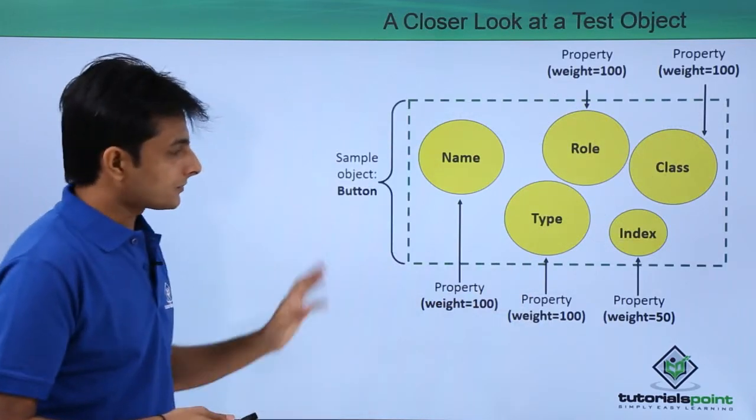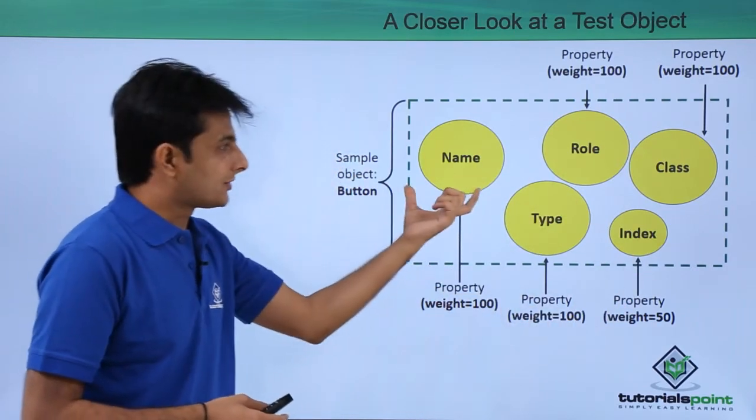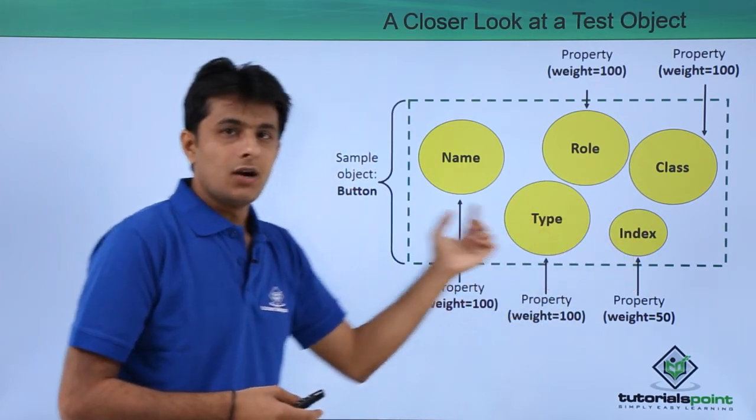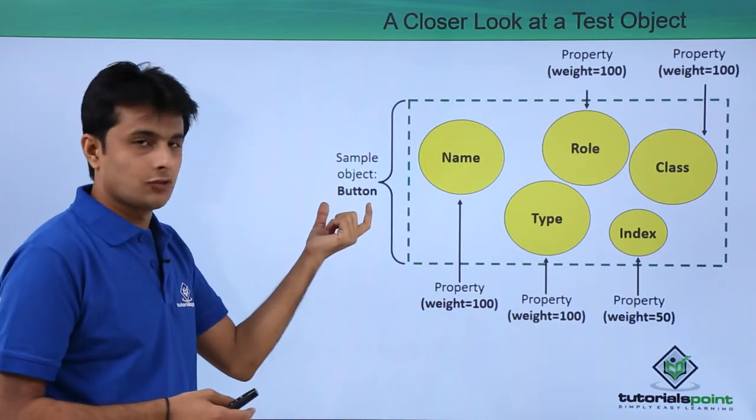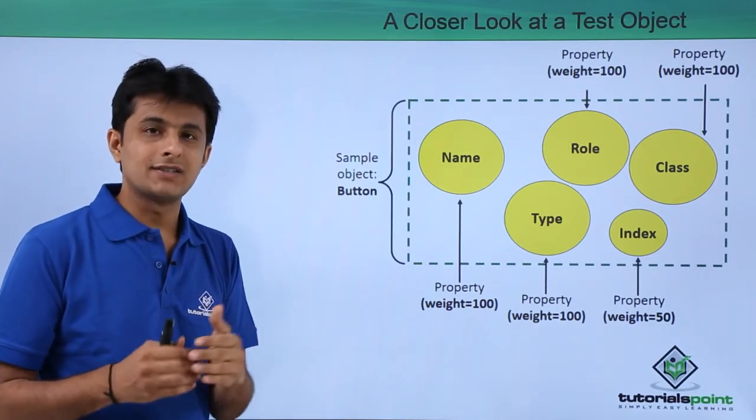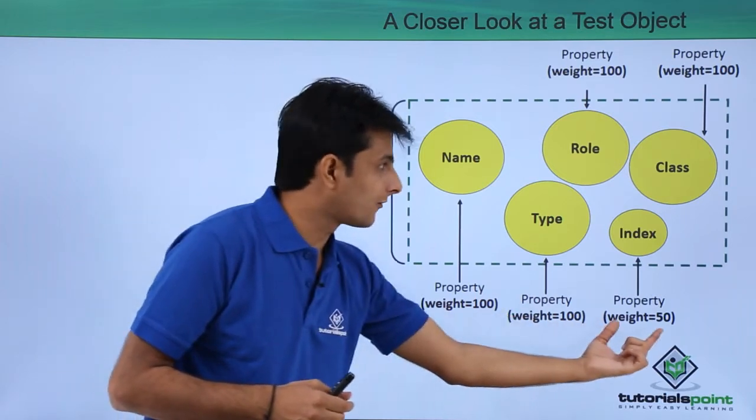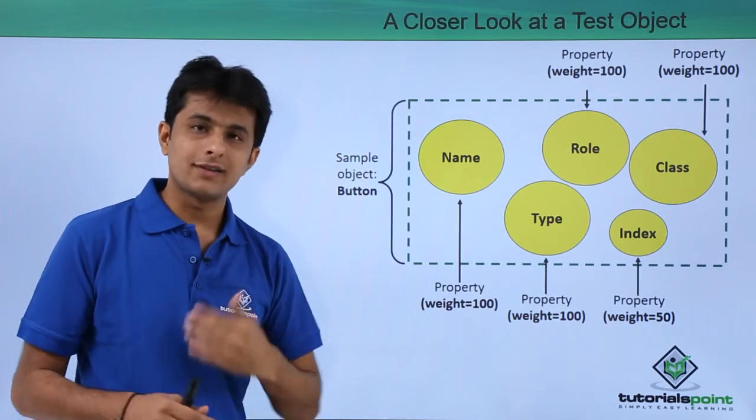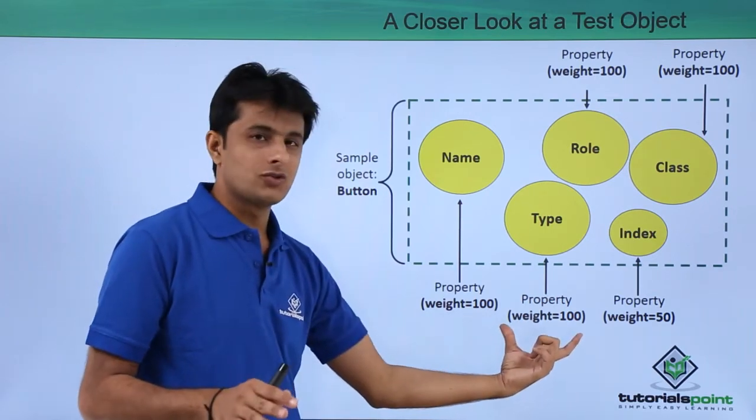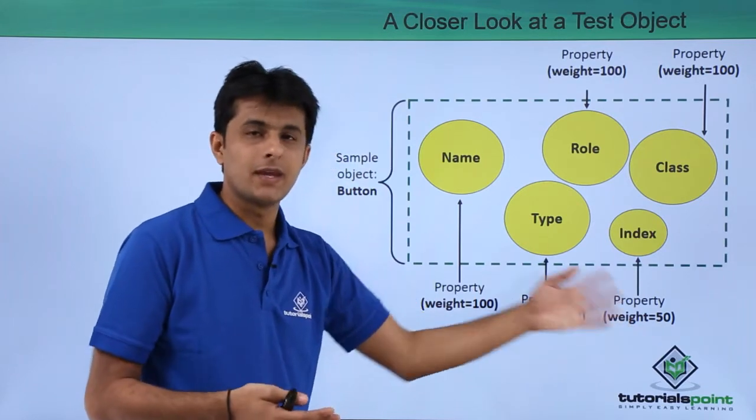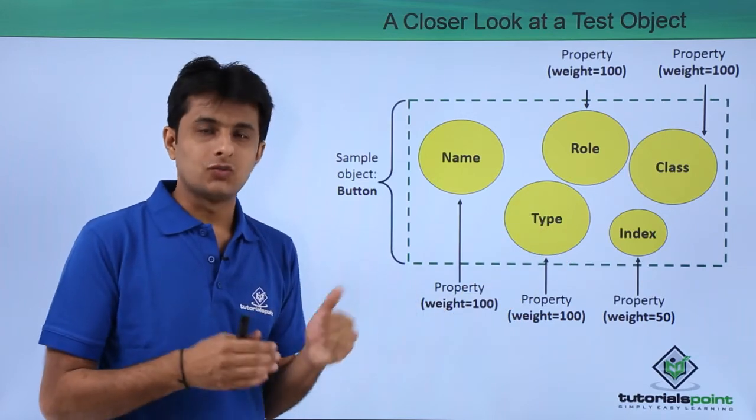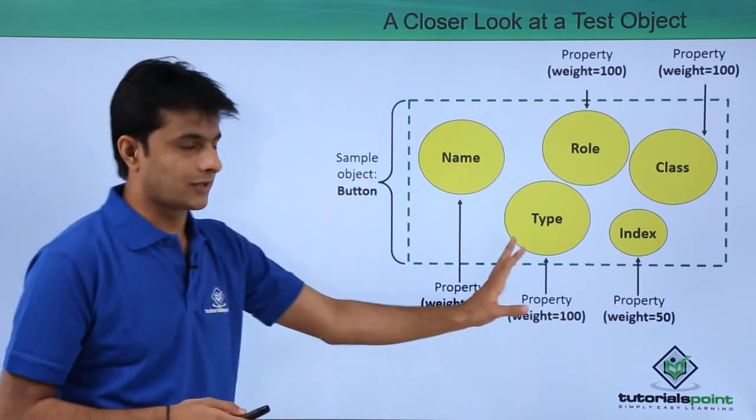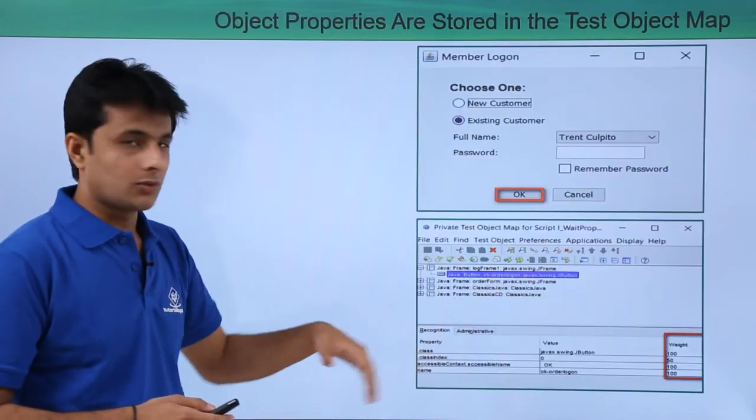Let me show you in more detail. These are the property values - properties name, type, role, class, and index. All the properties of this object named as button are given some weightage, given some preference. You can see 100, 100, 50, 100, and 100. Now these are totally customizable - these are not fixed by RFT. You can just customize, that means you can give preference to type as higher as compared to index. Based on this weightage the preference is given, and the warning and threshold has been categorized.